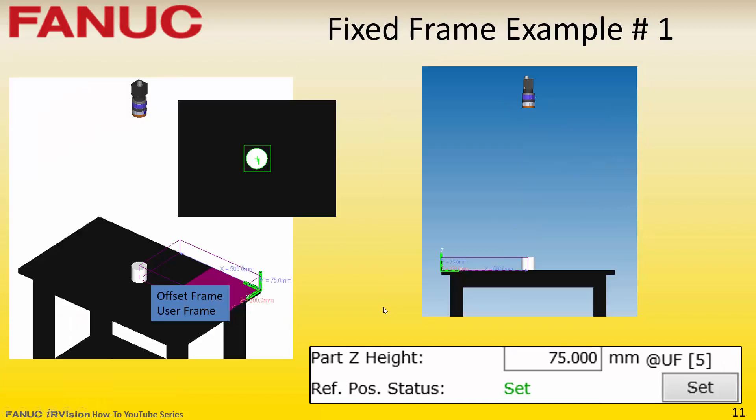In this first example of a fixed frame offset, the offset frame user frame has been taught to the top corner of the table with the Z axis pointing up towards the camera. The part Z height for this vision process will be 75 millimeters, which is the height of the part as it sits on the table.